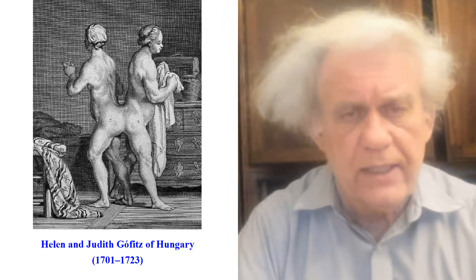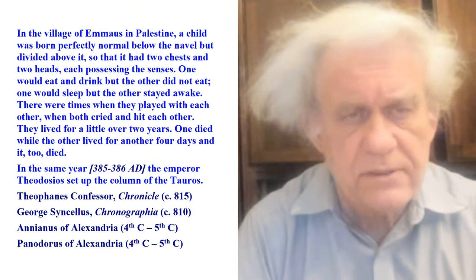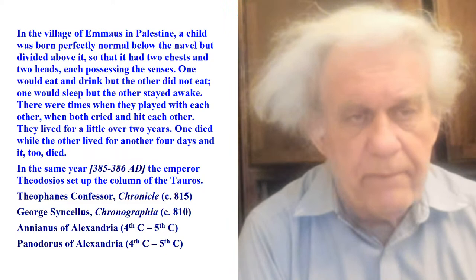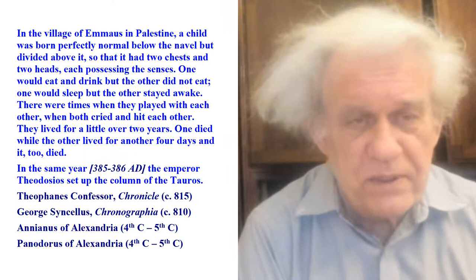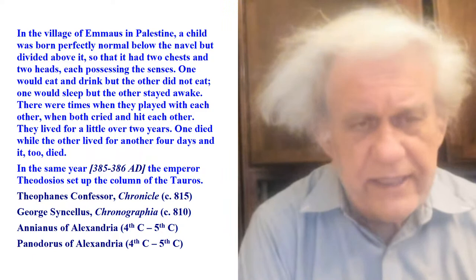They were not even the first. The first documented ones we have today — in the village of Emmaus in Palestine, a child was born perfectly normal below the navel, but divided above it so that it had two chests and two heads, each possessing the senses. They're describing Siamese twins from the year 385 to 386.